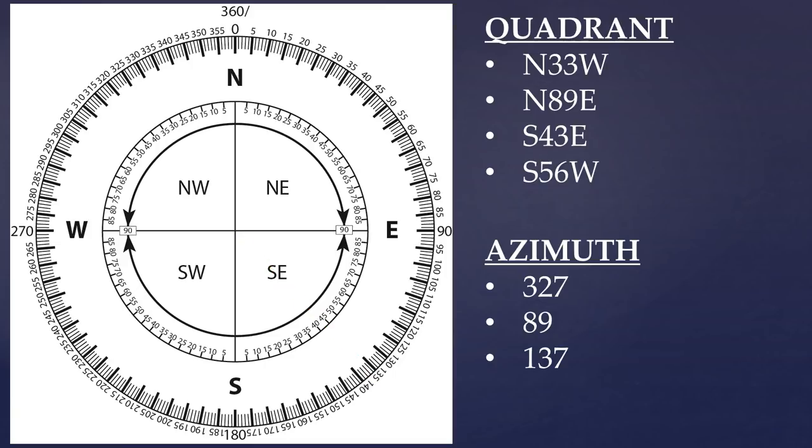And then our last normal one that we'll do, south 56 west. So the southwest quadrant. We're going to be at south and we're going to go 56 degrees to the west. In this case, we're at 180. We're going to add to 180 since we're increasing our numbers as we go further and further back towards north. So 180 plus 56 is 236.